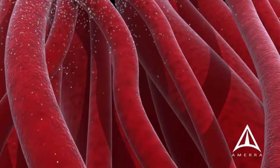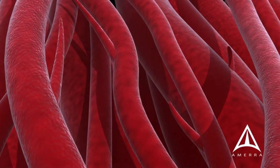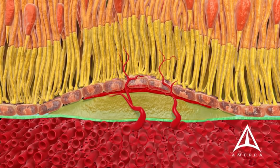VEGF binds to its receptors much like a key entering a lock. VEGF is a signal which causes leaky blood vessels to form underneath the retina. As these abnormal blood vessels leak and bleed, the retina becomes swollen and vision may decline.